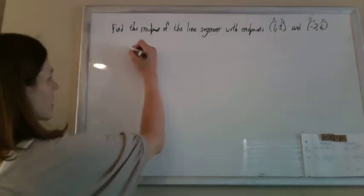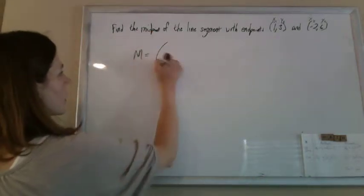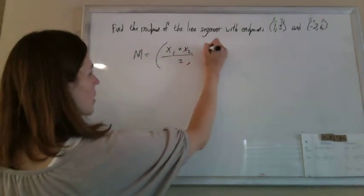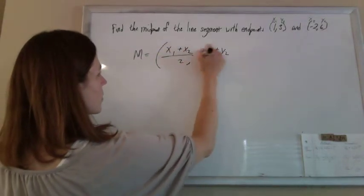Okay, so midpoints. Your midpoint formula is x1 plus x2 over 2, comma y1 plus y2 over 2.